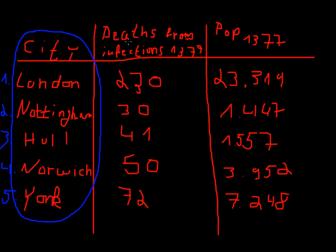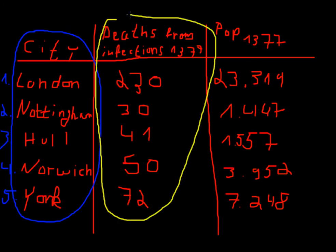The deaths from infection in 1377, this is our response variable. We want to have a theory that says the bigger the town the more deaths from infections. So this is our response variable. Let's put it in yellow. This is our response variable.